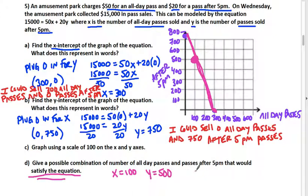Let's double-check it. 15,000 equals 50 times X, which I have as 100, plus 20 times Y, which I have as 500. Let's type in our calculator: 50 times 100 plus 20 times 500. When you type that in, you get 15,000, so it does work in the equation.